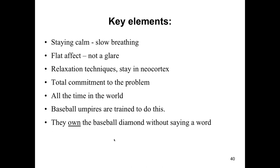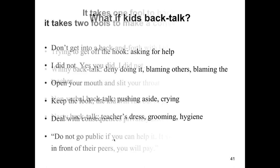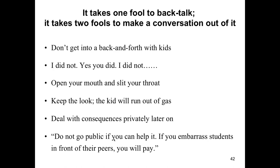Flat affect — it's not a glare. You use relaxation techniques like breathing — a calm, relaxing breath. You stay in your neocortex and you are totally committed to the problem. The message is: all the time in the world. Like baseball umpires who own that diamond — the players and manager know they can be ejected at any point. Kids will try to get off the hook — they'll blame it on somebody else, give the smiley face, give some back talk, or use body language to push you aside. Sometimes there's even nasty back talk about the teacher's dress or grooming. The trick, Fred Jones says, is to ignore all that. It takes two fools to make a conversation out of it — open your mouth and slit your throat, as Fred says. So you keep the look.